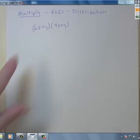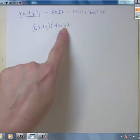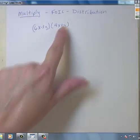So we're going to take the first term in the first polynomial and multiply it times both terms in the second polynomial, and then we'll take the second term and multiply it times both terms.